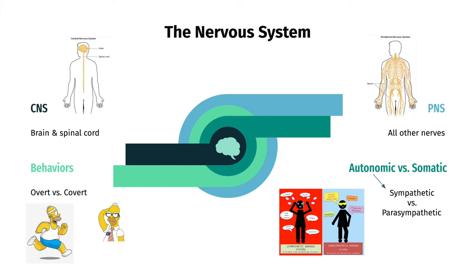Our behavior is any physiological response elicited by our nervous system. Overt behaviors are ones that you can see, like movements, and covert behaviors are ones that you can't, like thinking. We also have automatic behaviors, like our heart beating, homeostatic behaviors that maintain us, like eating, and higher cognitive behaviors, like learning.